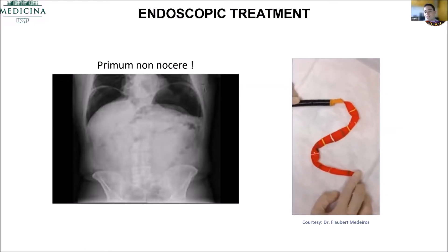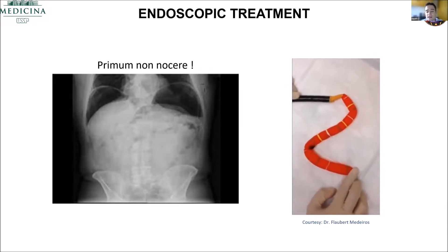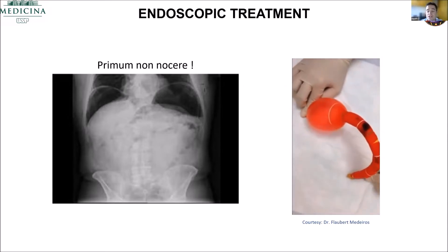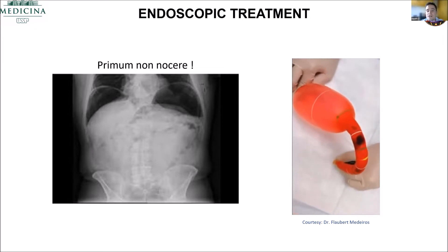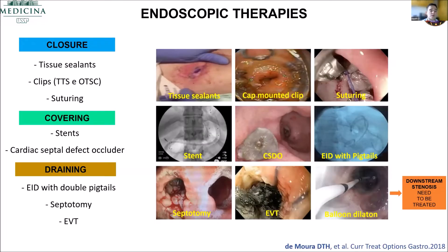How to treat these patients: when you don't have an external drain, you need to take care. You cannot disrupt the contained collection. Never go with air, because the air is going to expand the collection and you can open it, making the patient worse. Always go with the underwater technique — even CO2 sometimes is not good. The techniques for treating these complications include closure, covering, and draining techniques, and we're going to talk about all these approaches.